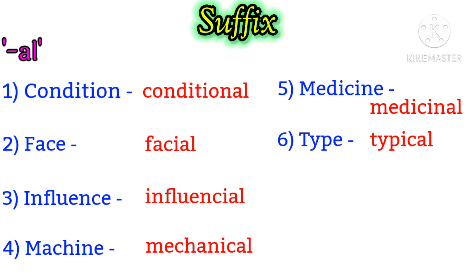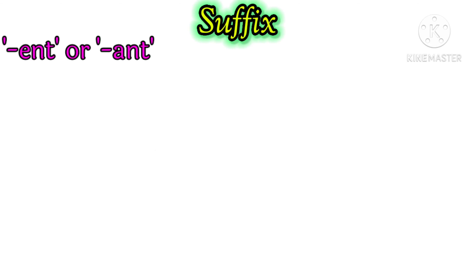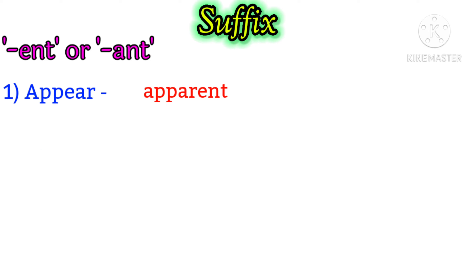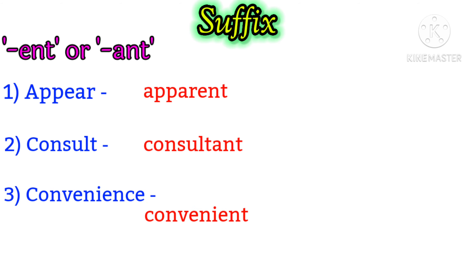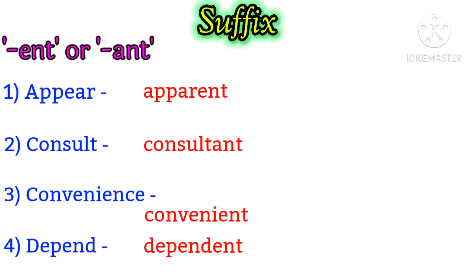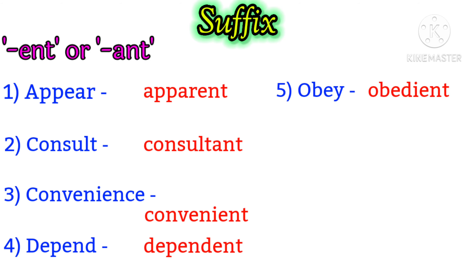Using the suffixes ENT or ANT: appear becomes apparent, consult becomes consultant, convenience becomes convenient, depend becomes dependant, obey becomes obedient.